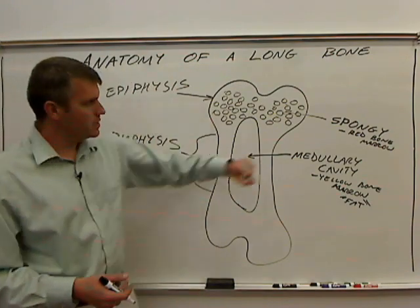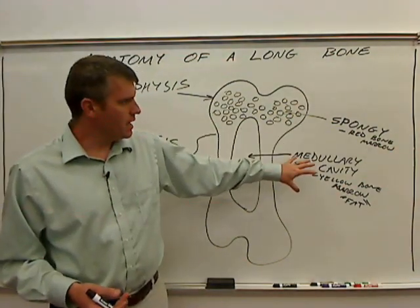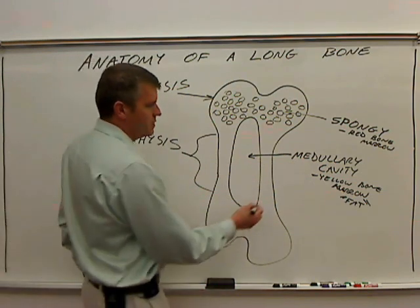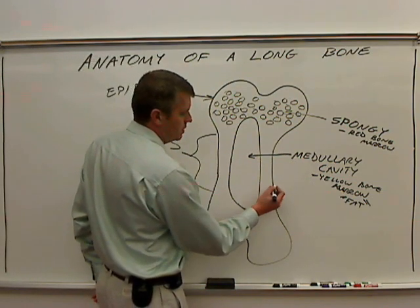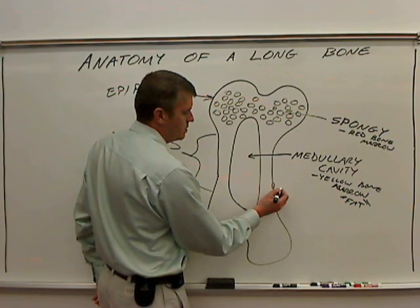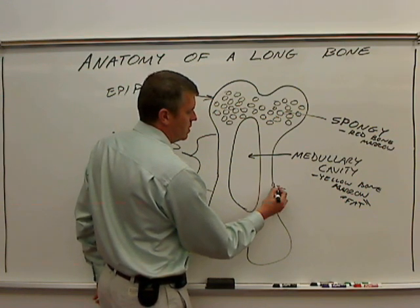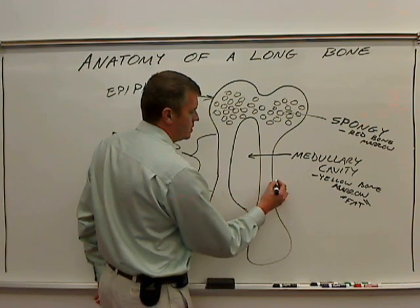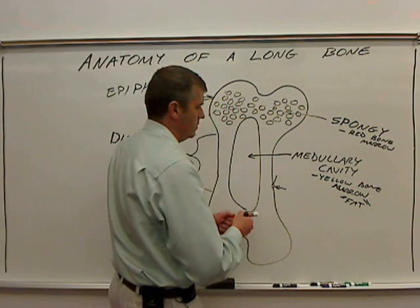So to recap: we get epiphysis, diaphysis, spongy bone, and medullary cavity. You will often see holes that go into the bone, and if it's a living bone there will be a blood vessel coming out of it.